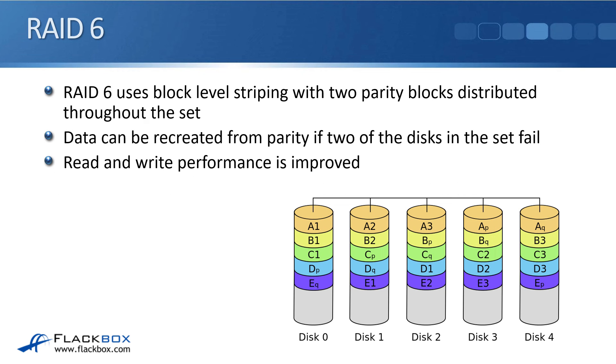Next one is RAID 6. So RAID 4 and 5 give us redundancy if any one disk in the set fails. RAID 6, that uses block-level striping with two parity blocks distributed throughout the set, so data can be recreated from parity if two of the disks in the set fail. So with RAID 6, we get more redundancy than we did with RAID 5 and RAID 4. RAID 5 and RAID 4, we can recover from one disk failing. RAID 6, we can still work even if two disks fail.